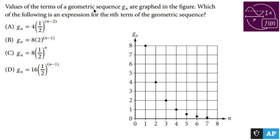Values of the terms of a geometric sequence g sub n are graphed in the figure. All right, so the first term is 8, the second term is 4, and so on.